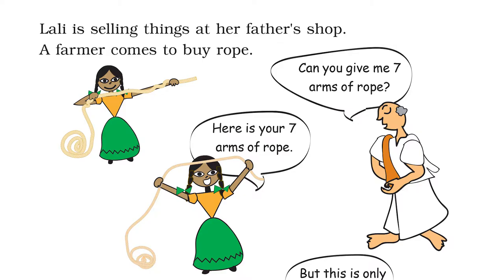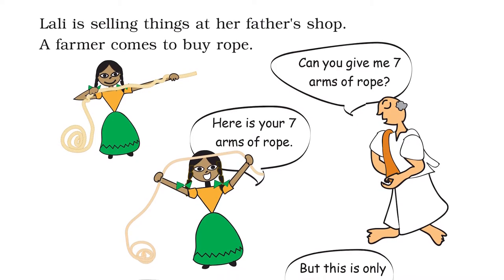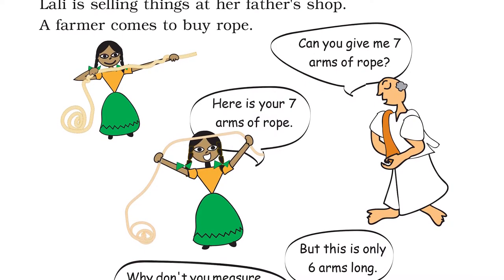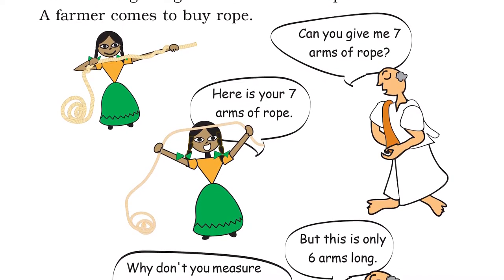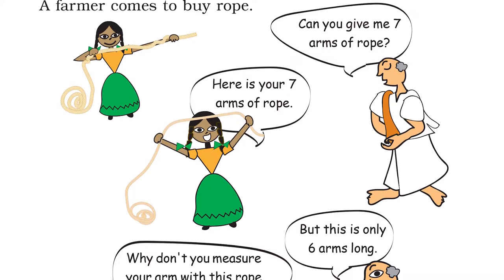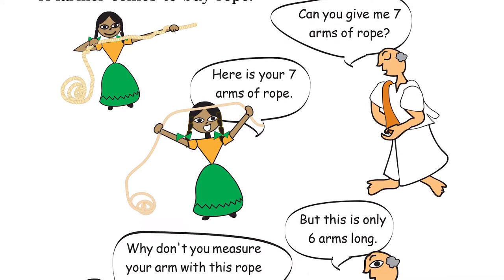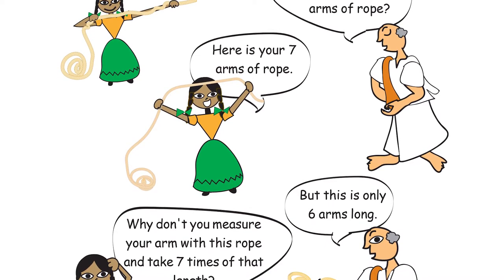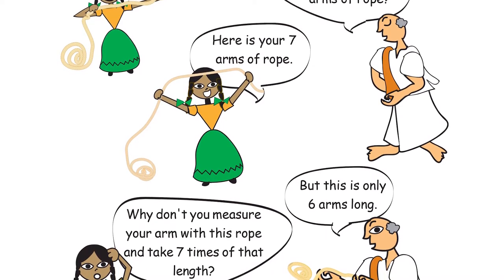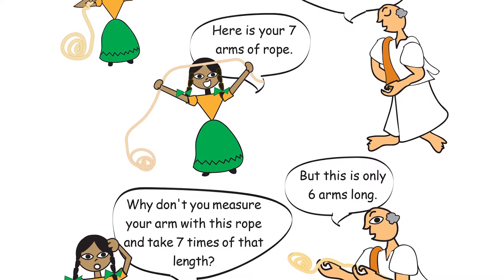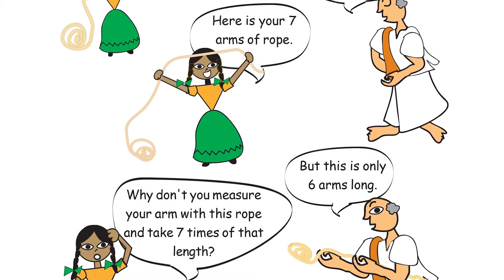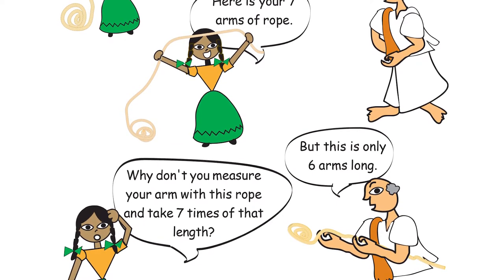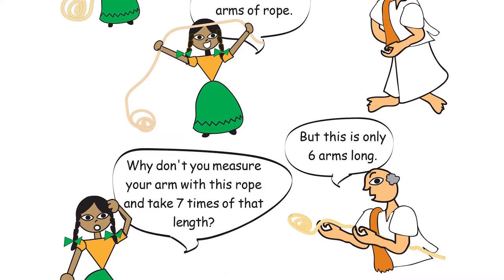It's a story about a girl named Lali. Lali is selling things at her father's shop. A farmer comes to buy rope. The farmer said, can you give me seven arms of rope? Lali said, here is your seven arms of rope, and she measured the rope with her arms. Then the farmer said, but this is only six arms long. Lali got confused as she also measured correctly. So Lali said, why don't you measure your arms with this rope and take seven times of that length?